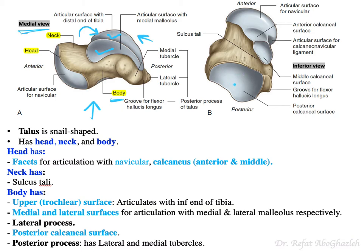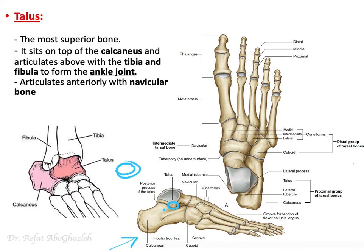Also on the body, posteriorly, there is the third calcaneal articular surface — the posterior calcaneal surface. We already mentioned the anterior and middle calcaneal surfaces on the head; the posterior calcaneal surface on the body is the third one, articulating with the calcaneus. You can see it located here on the posterior aspect.